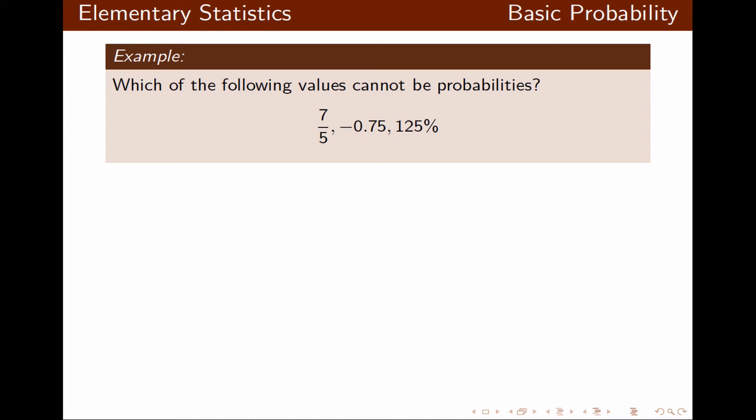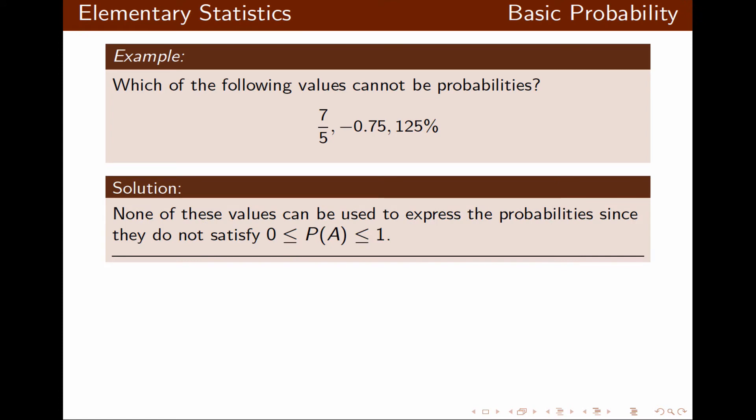Let's look at this example: which values cannot be used for probabilities? The answer is any value that is not between 0 and 1. Probability cannot be negative, and probability cannot be more than 1. It has to be between 0 and 1 inclusive.